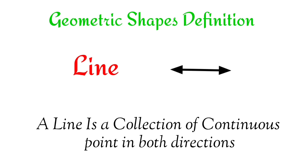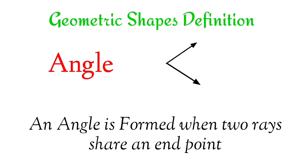Line. A line is a collection of continuous points in both directions. Angle. An angle is formed when two rays share an endpoint.